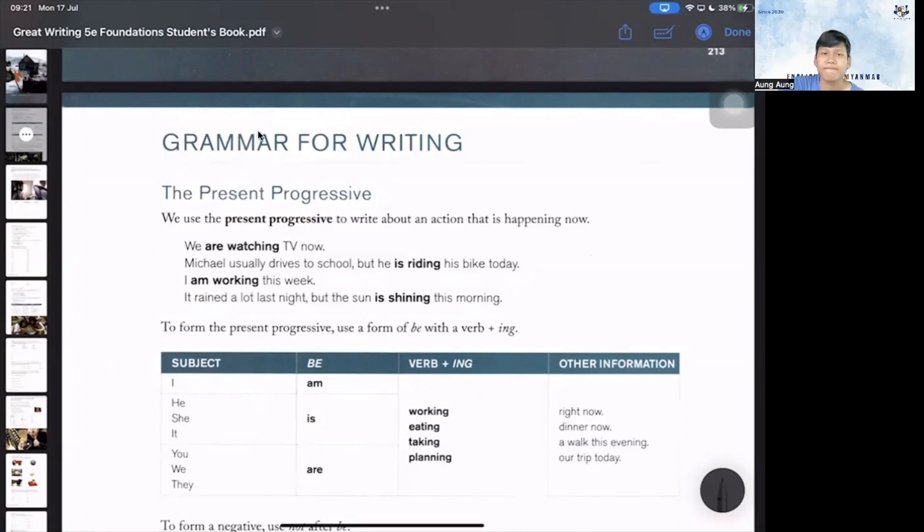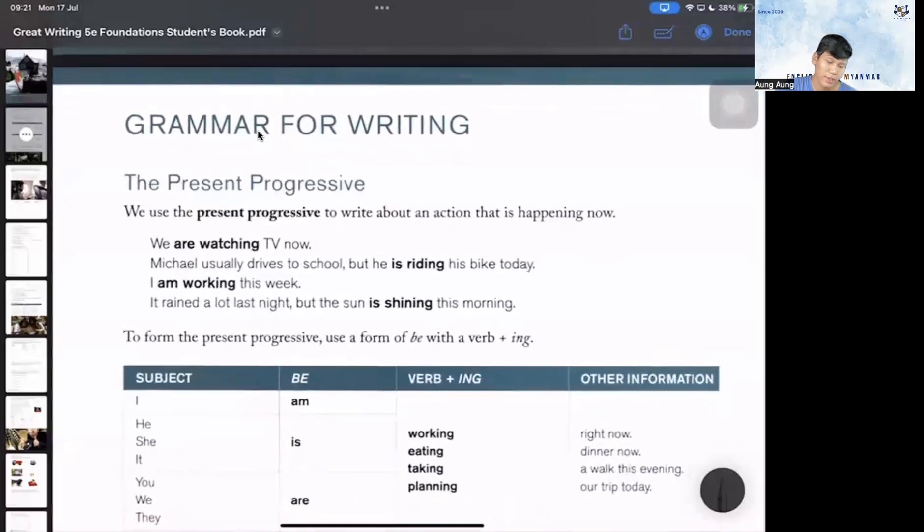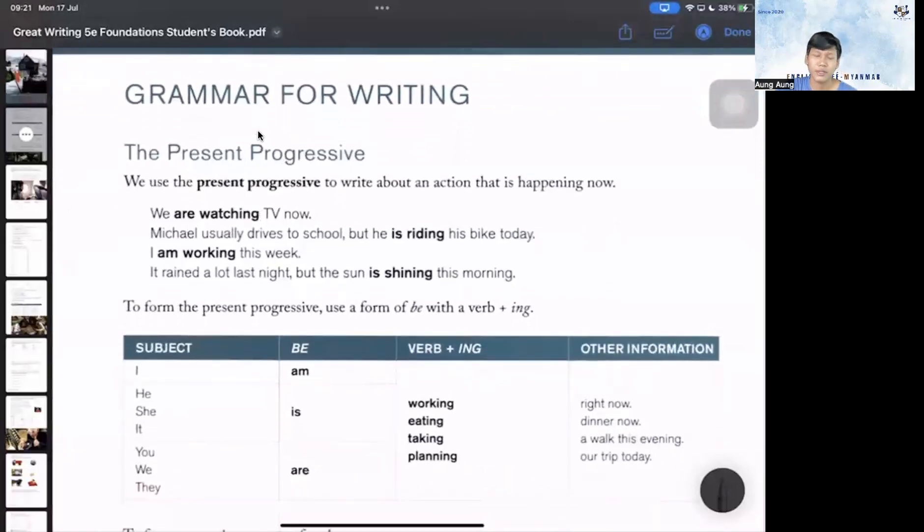The present progressive. So present progressive, I want to say, is an action that is happening now. For example, we are watching TV right now. I am sitting. I am talking. And then you are watching this video.